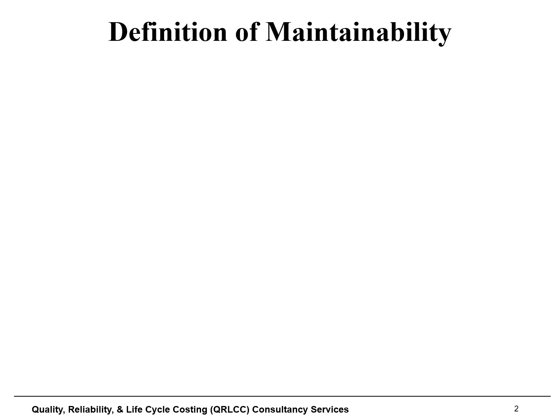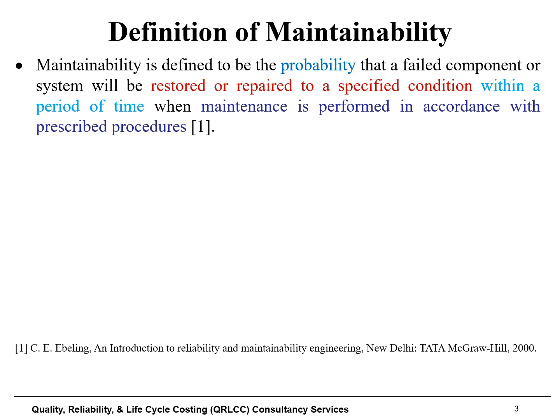I will highlight key terms and concepts behind these definitions and interpret them in detail. The first definition of maintainability, taken from reference one, states that maintainability is the probability that a failed component or system will be restored or returned to a specified condition within a period of time when maintenance is performed in accordance with the prescribed procedures.